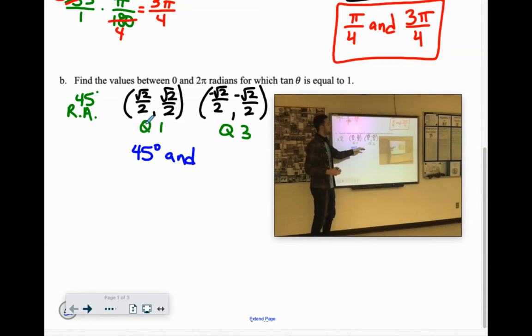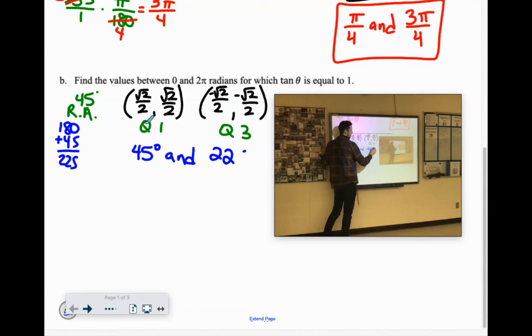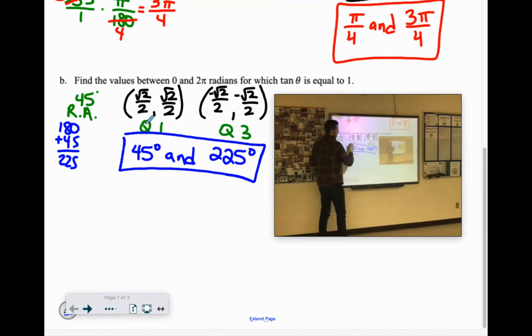Quadrant 3, we'd have to do 180 plus that 45-degree reference angle, which gives us 225 degrees. Awesome. There's all the degrees where that happens.